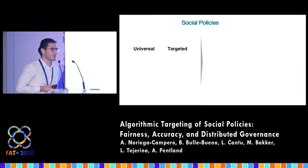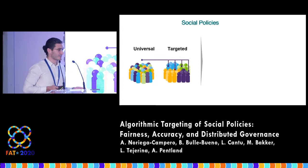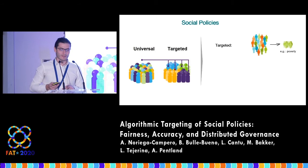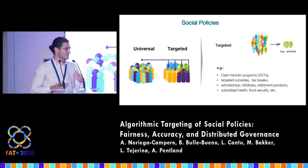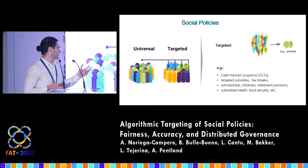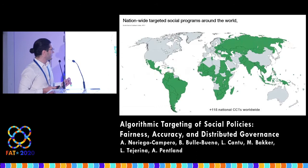What do we mean by targeted social policies? There are universal social policies and there are targeted social policies. Targeted social policies aim at only a subset of the population, typically those in a condition of poverty or additional vulnerability. Examples include conditional cash transfers, targeted subsidies, tax breaks, targeted scholarships, child care, retirement, pension, subsidized health and security, etc. It's really a manifold of social programs.